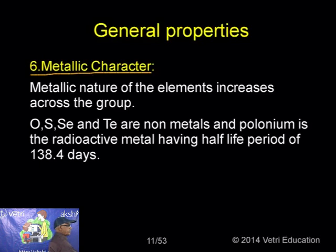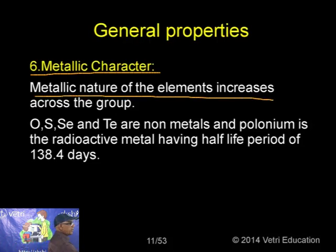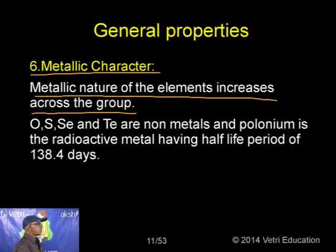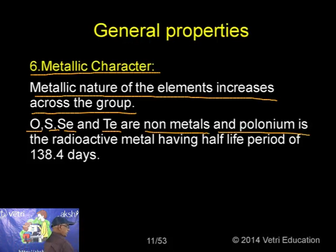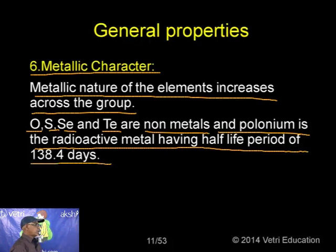For metallic character, it increases down the group. Oxygen, Sulphur, Selenium, and Tellurium are non-metals, while Polonium is a radioactive metal with a half-life period of 138.4 days.